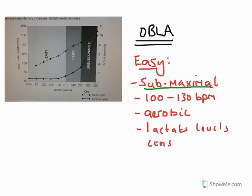We have no onset of accumulation of lactic acid, so we have not reached OBLA. We can see on the curve that there is no real accumulation of lactic acid — we have the same quantity of lactate as at rest, with only a slight increase as intensity increases. The general trend is that lactate levels remain constant, and we describe this as a state of equilibrium.